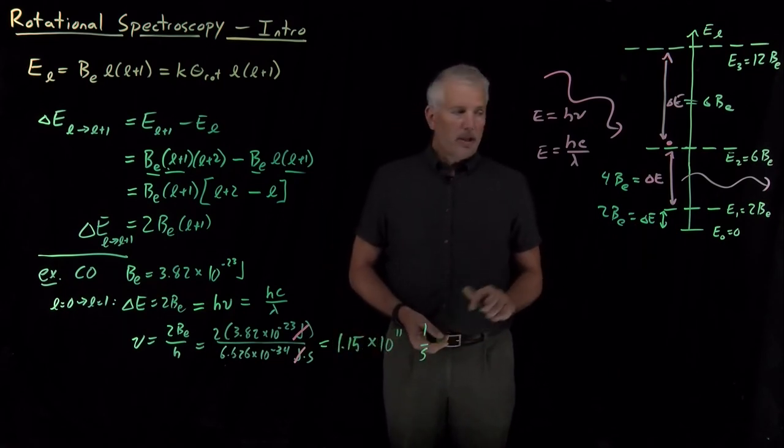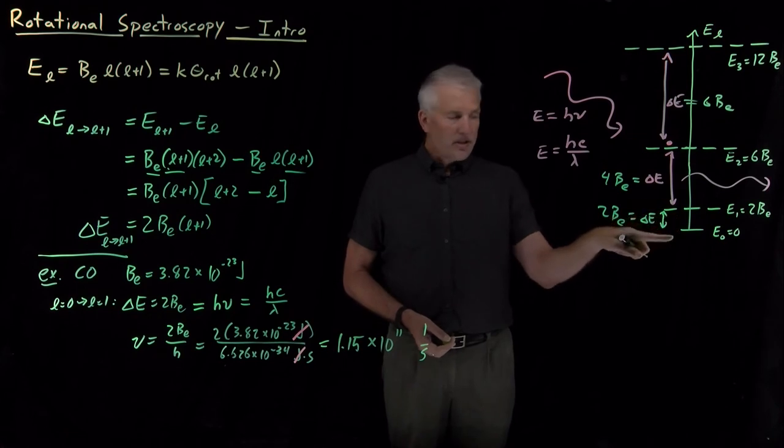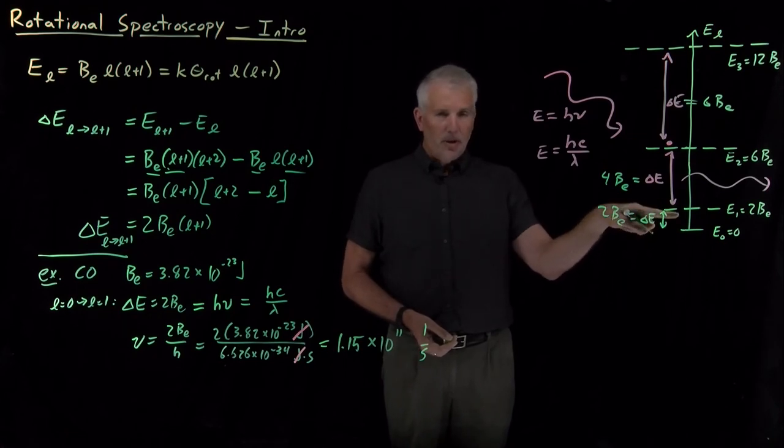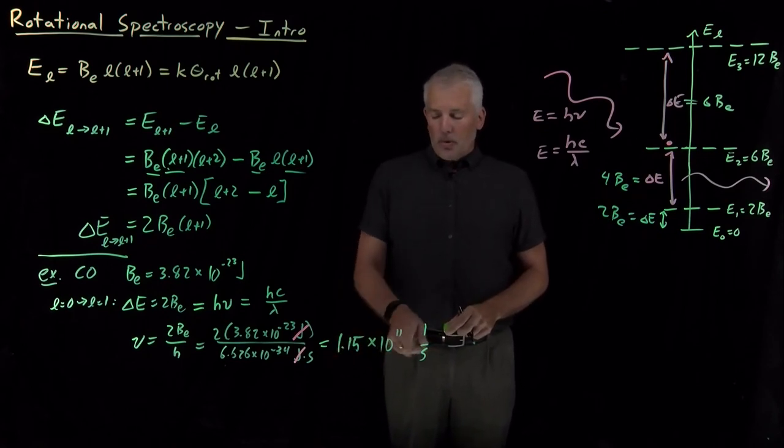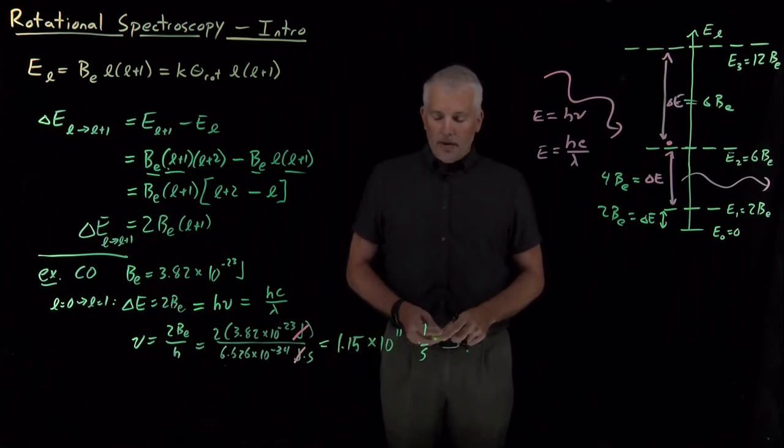So the frequency of a photon used to excite this rotational transition from a non-rotating molecule up to a slightly rotating L equals one rigid rotor state would be 1.15 times 10 to the 11th per second.